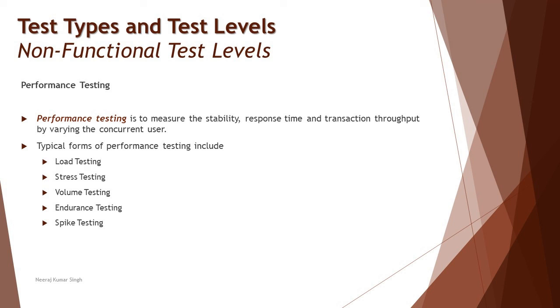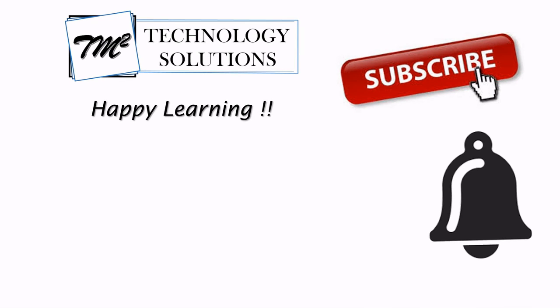So performance testing has five sub-levels conducted for every application: load testing, stress testing, volume testing, endurance testing, and spike testing — with spike being optional if your application anticipates a sudden increment. I hope that gives you a clear picture of what performance testing is all about. We will look at more non-functional tests in upcoming tutorials. Feel free to comment below with any queries. Thanks for watching, keep learning, keep exploring, and happy learning!